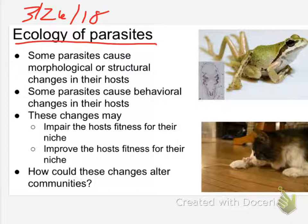As you're copying, I'll read it and then I'll stop. Some parasites cause morphological, structural changes in their hosts. Some parasites cause behavioral changes in their hosts. These changes can either impair the host's fitness for their niche, or improve the host's fitness for their niche. How could these changes alter whole communities? Could they?